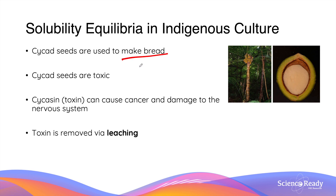However, Psyche seeds are toxic as they contain a toxin called Psyche acid. This toxin, if ingested, causes cancer and severe damage to the nervous system. The indigenous people use a process of leaching to remove the toxin before producing food from it, and this process of leaching is an application of solution equilibrium.